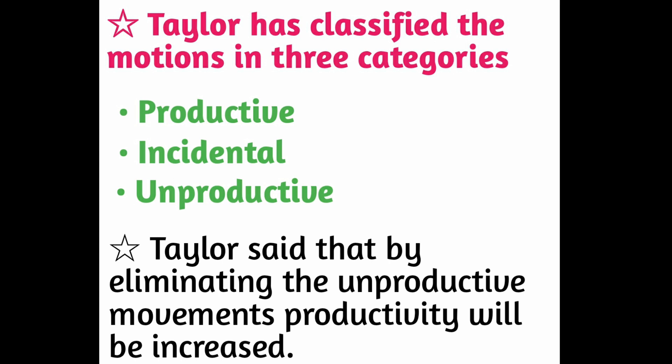Productive motion वो है जो production के लिए बहुत जरूरी है। Incidental motion वो है जो avoid नहीं की जा सकती — जैसे काम करते हुए कोई insect आ गया तो उसे हटाना जरूरी है। Unproductive motion वो है जो production के लिए बिल्कुल भी useful नहीं है। Taylor has suggested कि these unproductive motions should be eliminated, क्योंकि it will reduce the time of production and minimize the cost of production। जब काम करने में कम समय लगेगा तो उस समय में ज़्यादा काम किया जा सकेगा, cost भी कम होगी। So Taylor has suggested motion study.